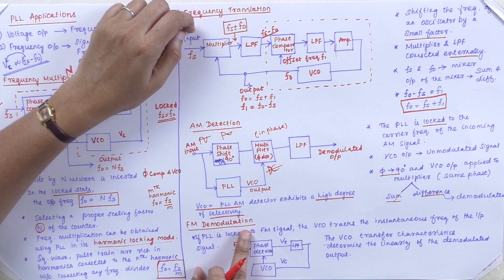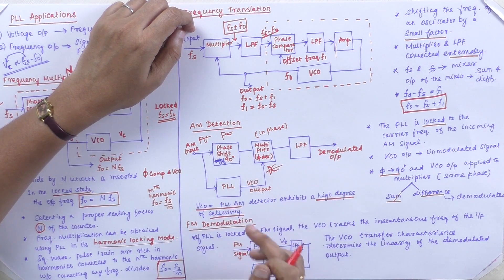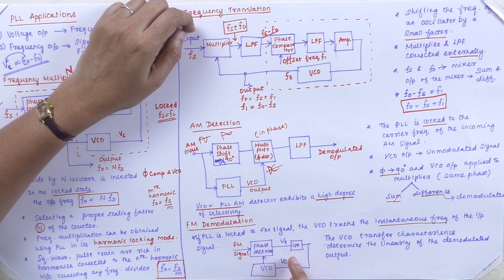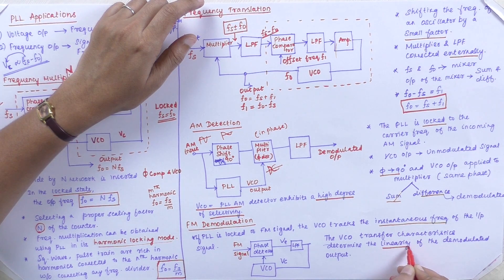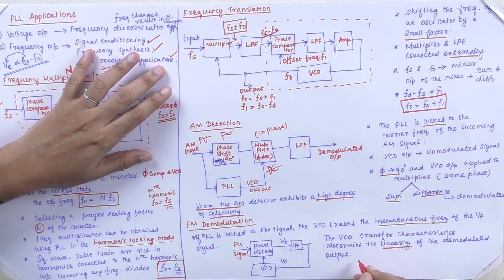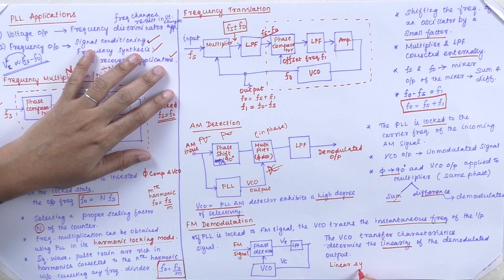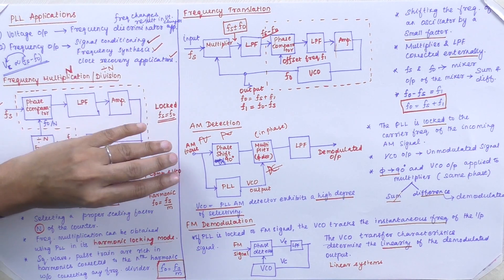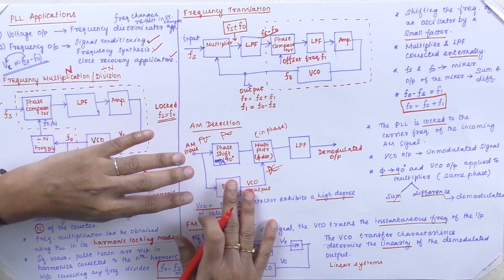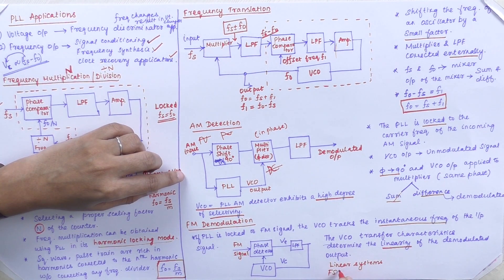The next concept is FM demodulation. When locked, the VCO tracks the instantaneous frequency of the input FM signal. The VCO transfer characteristics determine the linearity of the demodulated output — the PLL must operate as a linear system. PLL applications in this context apply to radar synchronization and communication processes. PLL applications fall under these four categories, with one more — FSK, frequency shift keying demodulation technique.